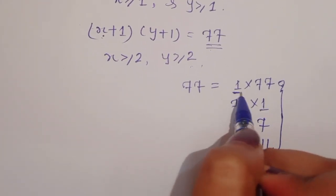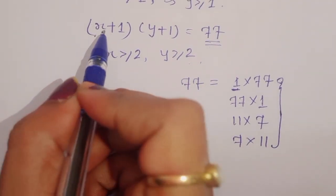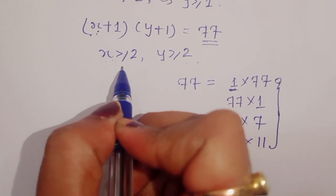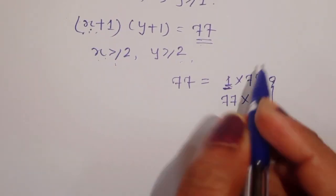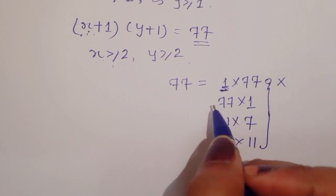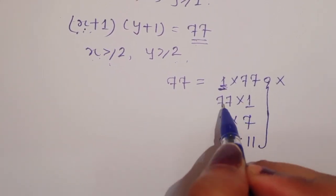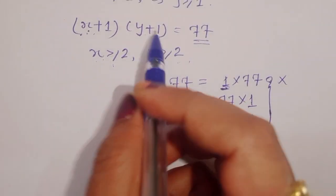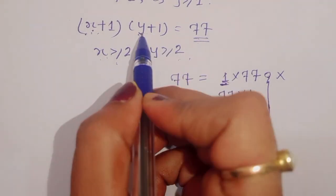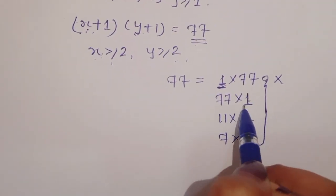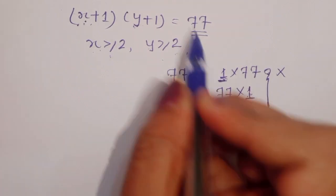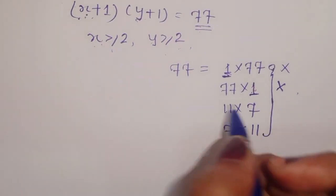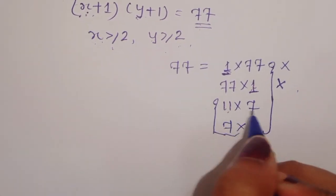If we take 1 × 77, then (x plus 1) equals 1, giving x equals 0 — but x must be greater than or equal to 2, so this is not possible. Similarly, taking 77 × 1 gives (y plus 1) equals 1, so y equals 0, which also violates the condition. Both these cases are invalid.